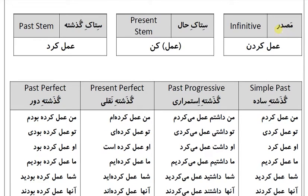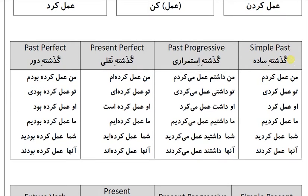Infinitive: عمل کردن. Present stem: عمل کن. Past stem: عمل کرد. Past simple (گذشته ساده): من عمل کردم، تو عمل کردی، او عمل کرد، ما عمل کردیم، شما عمل کردید، آنها عمل کردند.